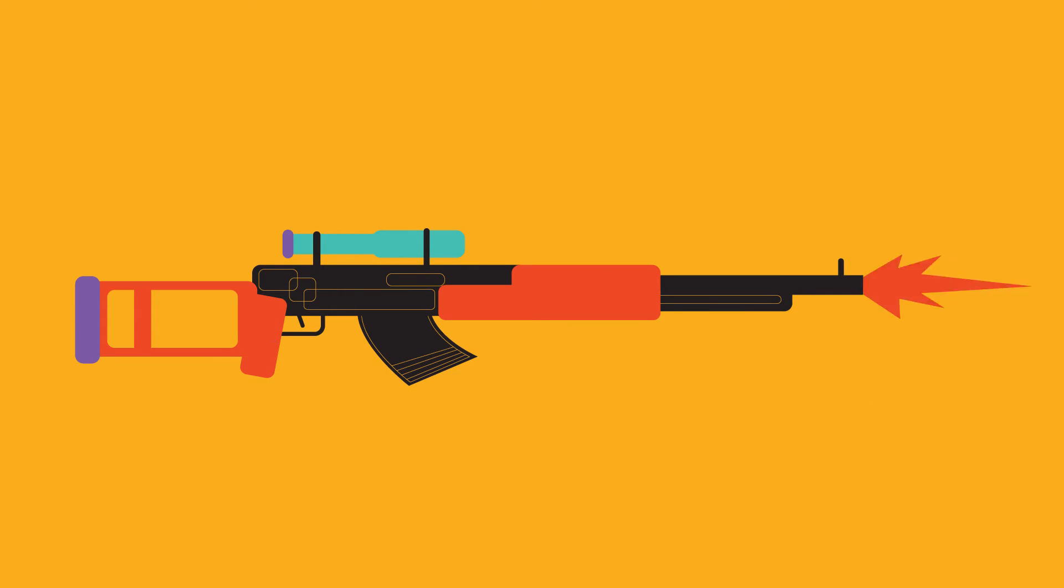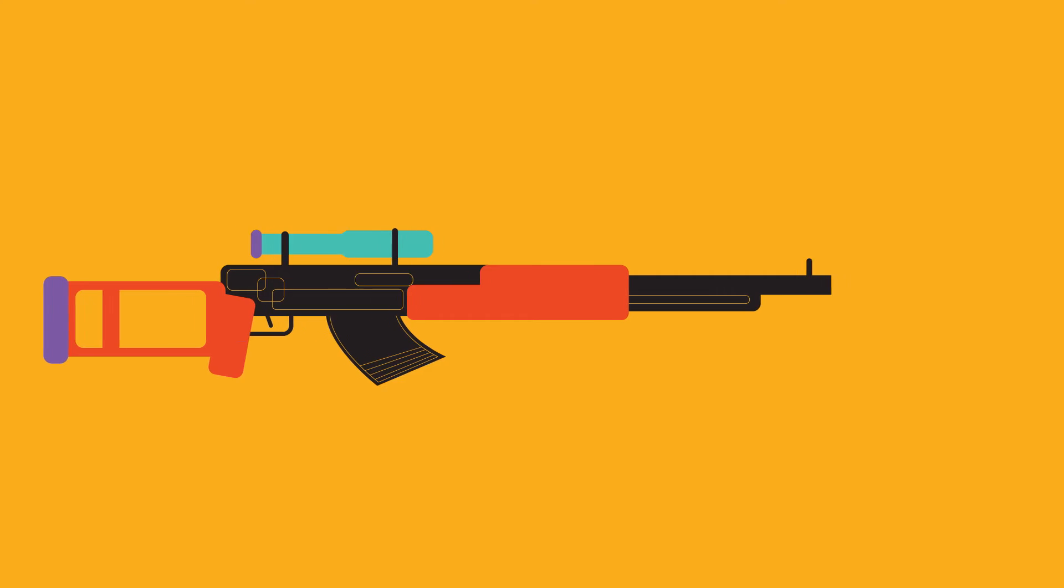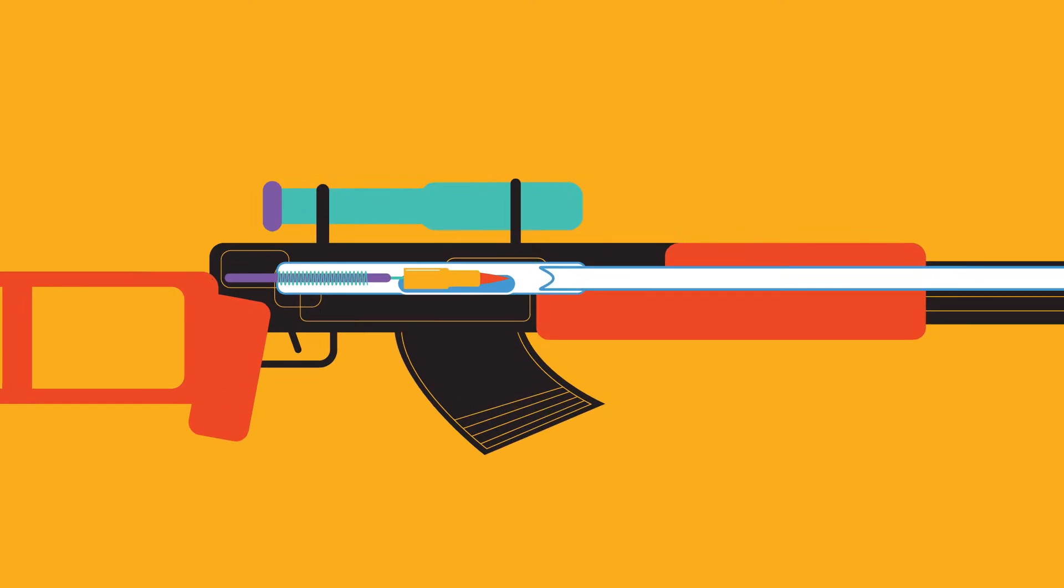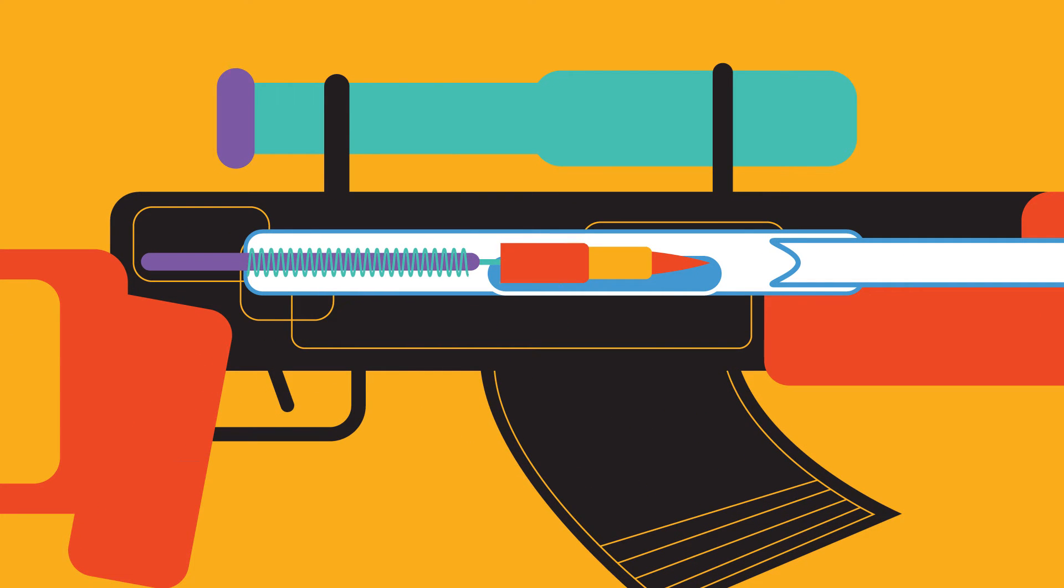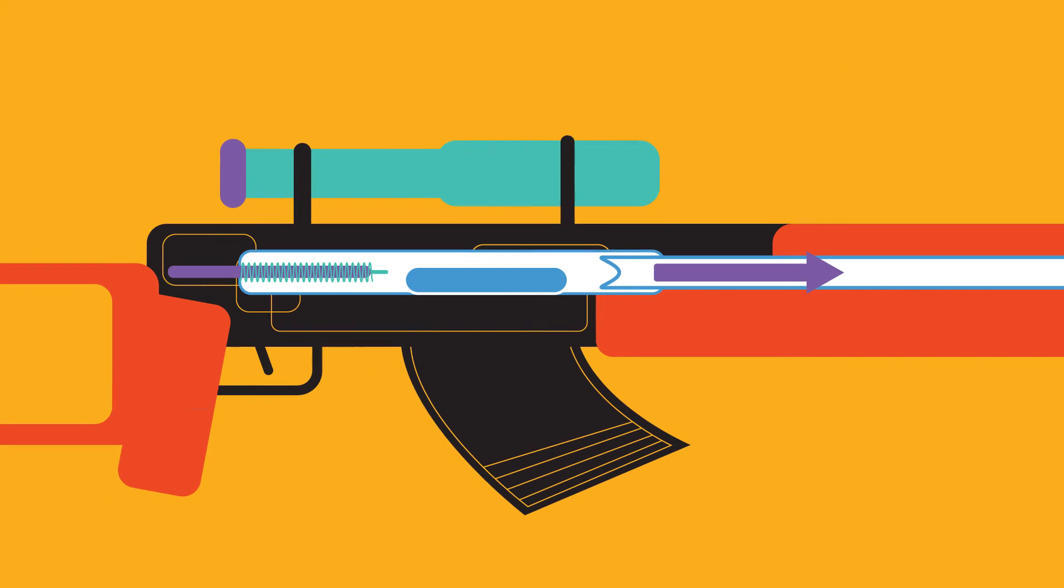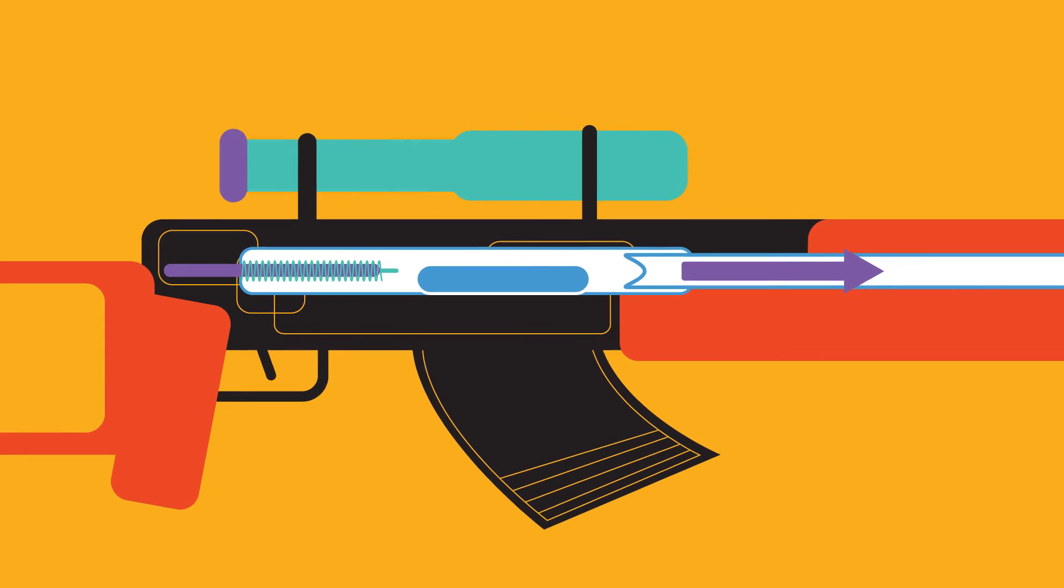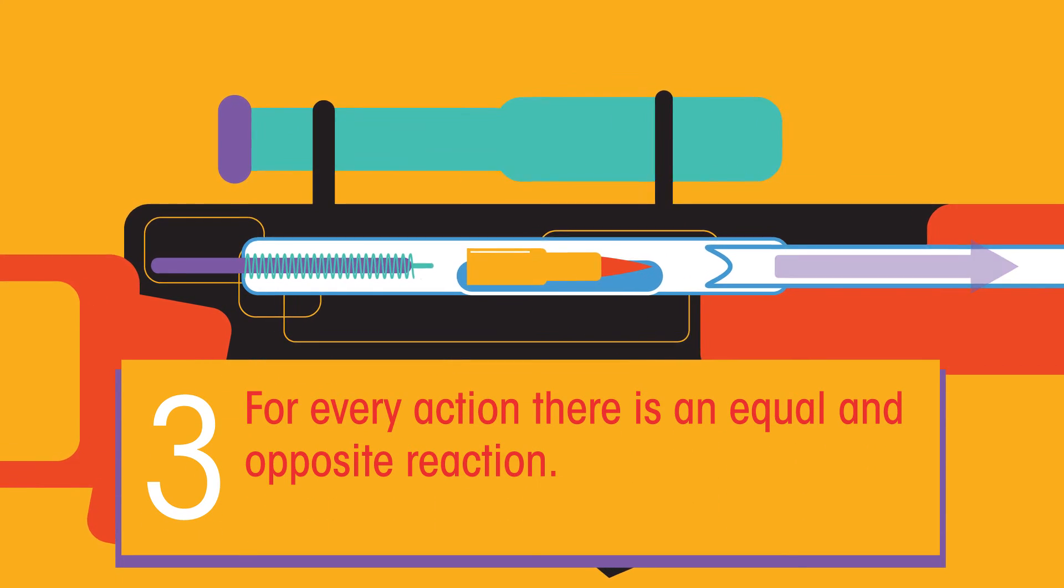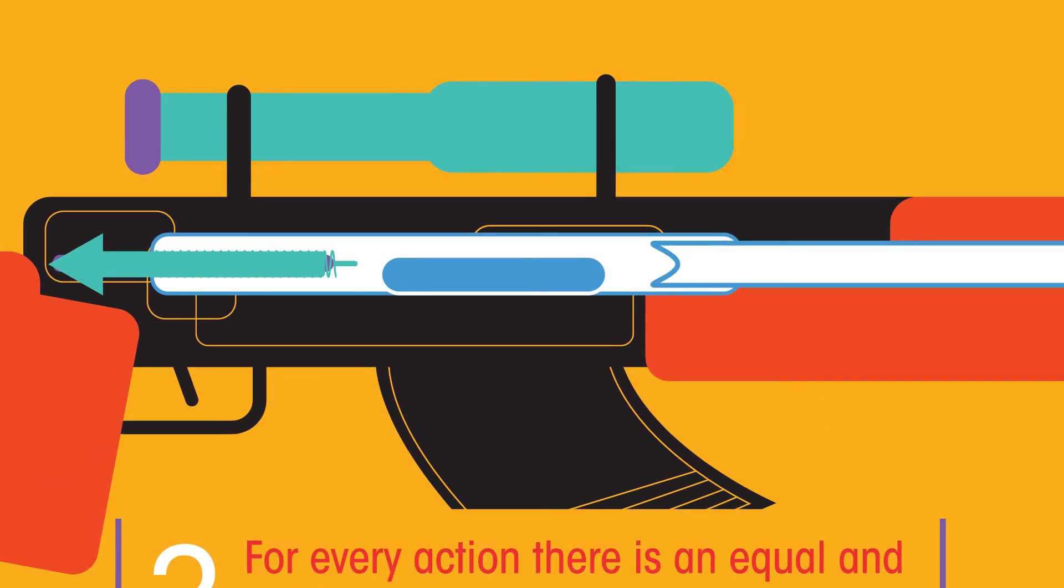Many people are familiar with the fact that a rifle recoils when fired. This recoil is the result of the action-reaction force pairs. A gunpowder explosion creates hot gases that expand outward allowing the rifle to push forward on the bullet. Consistent with Newton's third law of motion, the bullet pushes backwards upon the rifle.